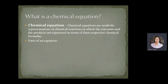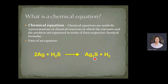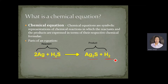Now, what are the parts of an equation? Given the example, we have two molecules of silver reacts with hydrogen sulfide, yields silver sulfide and hydrogen gas. So silver and hydrogen sulfide are our reactants, and silver sulfide and hydrogen gas are the products. The arrow represents the reaction symbol and divides the reactants from the products.